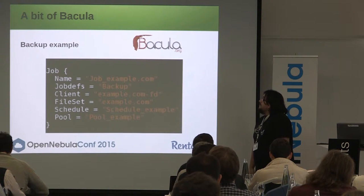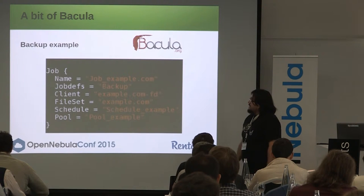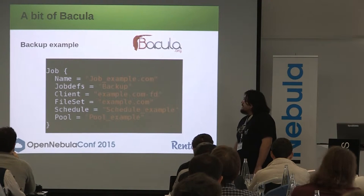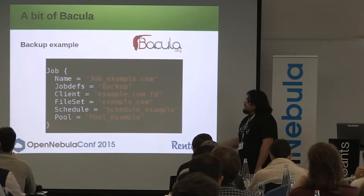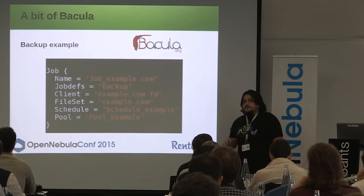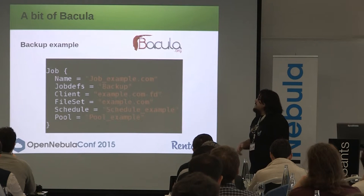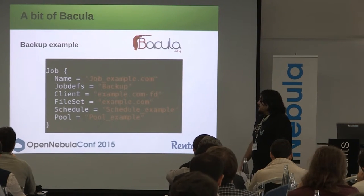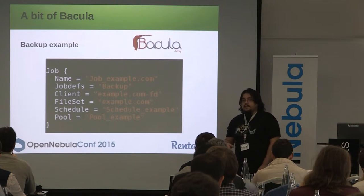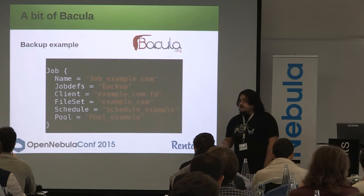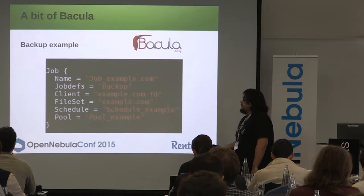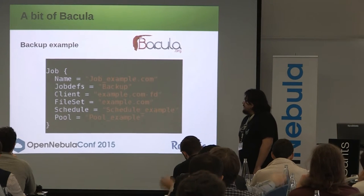This is an example of a Bakula configuration — it's called a job. It has a name, a job definition that is some sort of inheritance, params, and the client which is the host target, and the file set which is another definition with the data you want to backup, the scheduler for when you want to make this backup, and the pool for where to store it.